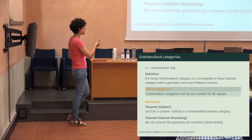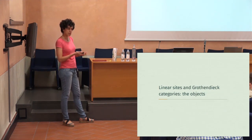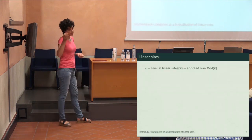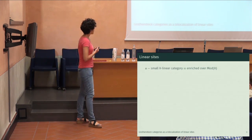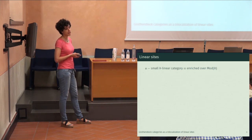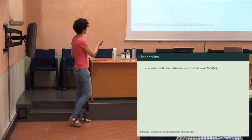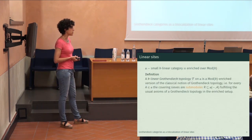Being this the motivation, let me start with the goal of the talk. I want to construct two categories, but let me describe their objects. I already talked about Grothendieck categories. Let me say what a linear site is. I fix a small k-linear category, which means it is a category enriched over k-modules. This means the homs are k-modules and the composition is k-linear, nothing else. Then we can define a k-linear Grothendieck topology.